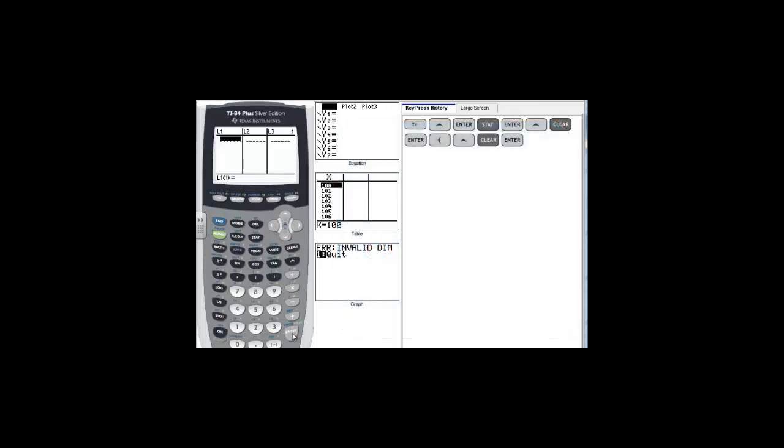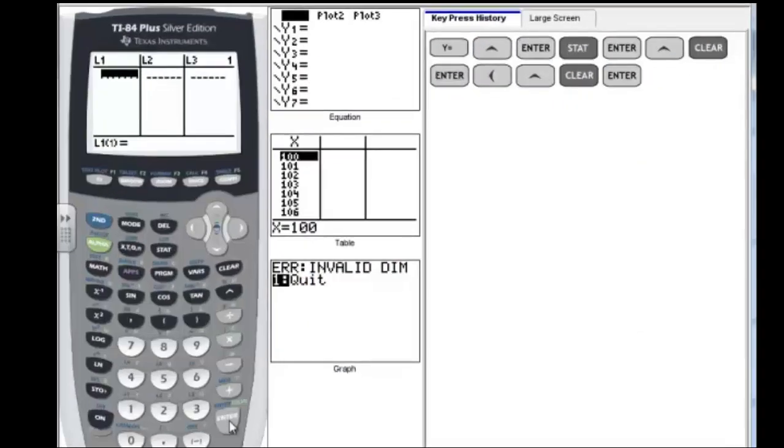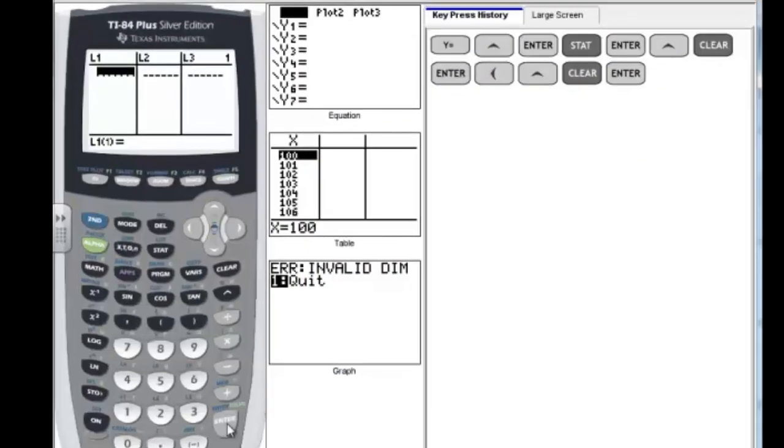Alright, now I'm ready to put my data in. So I'm going to put in for L1, these are my x values: 0, 1, 2, 3, and 4. So 0, enter, 1, enter, and so forth.